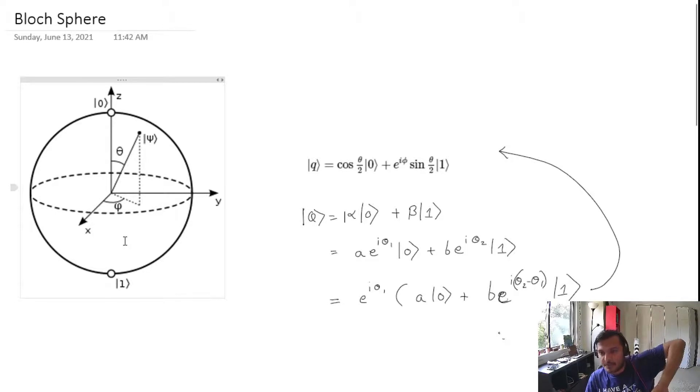Zero is the state vertically up, and pi is the state that's vertically down. That's the range of theta. Phi is the angle of rotation on this plane.